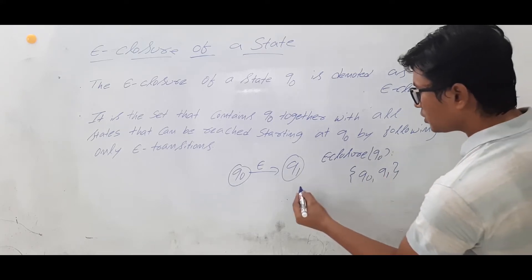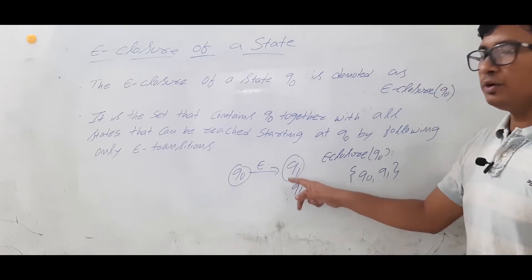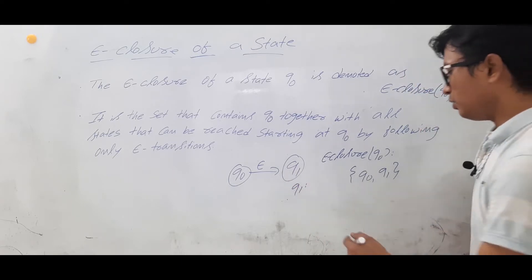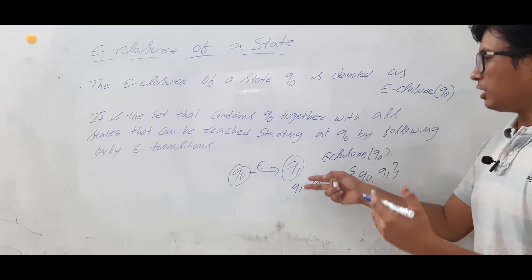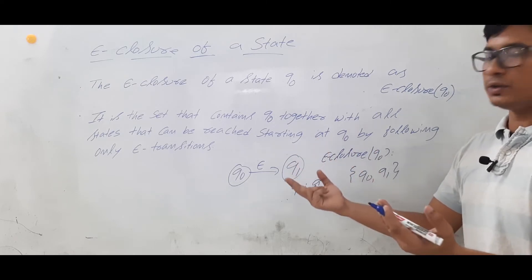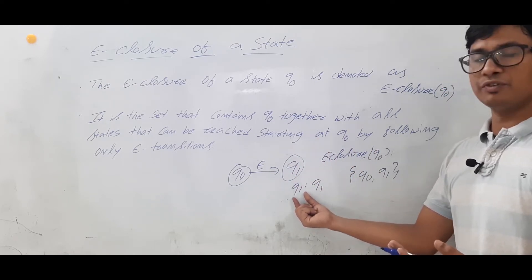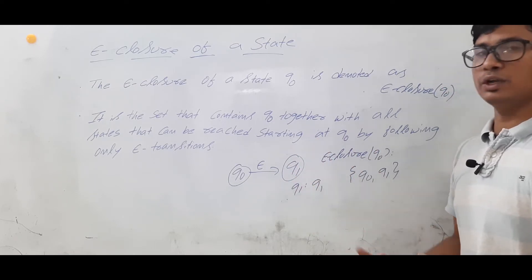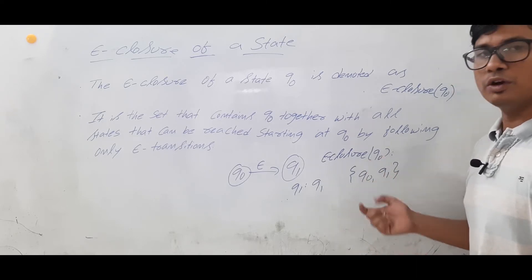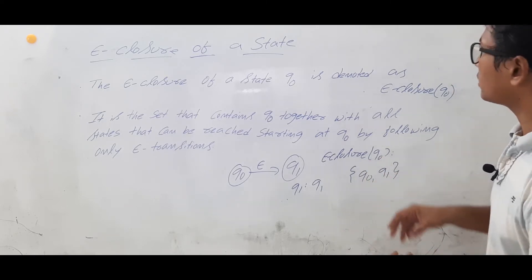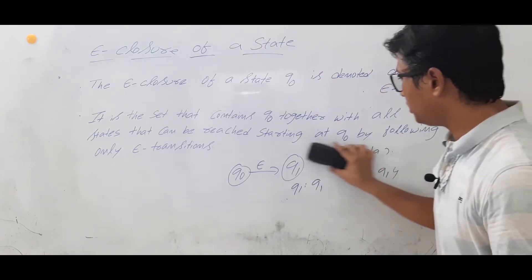Now what is epsilon-closure(q1)? From q1 you stay at q1, but from q1 on epsilon are you going anywhere? You are not going anywhere. So epsilon-closure(q1) will be only {q1}, while epsilon-closure(q0) is {q0, q1}.